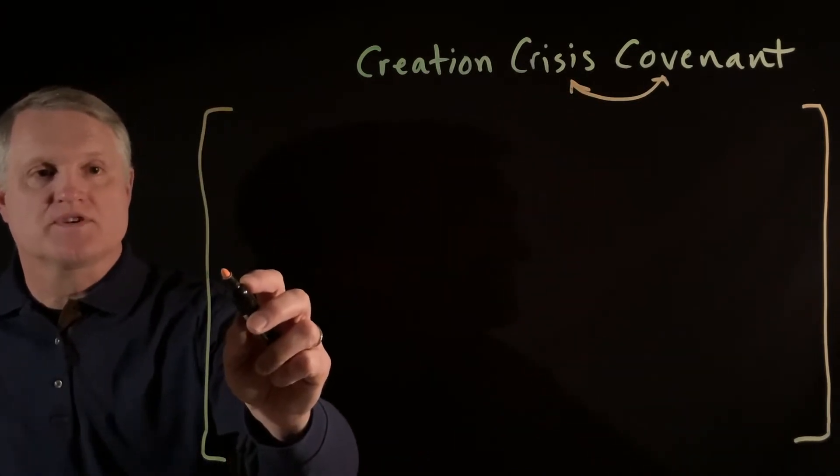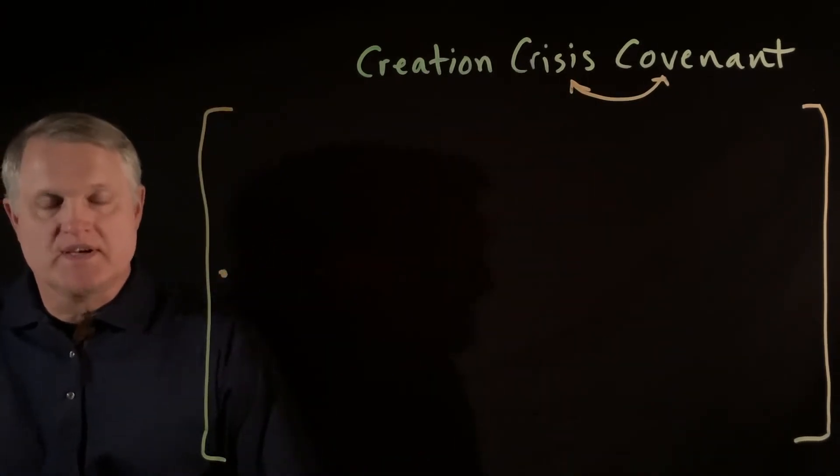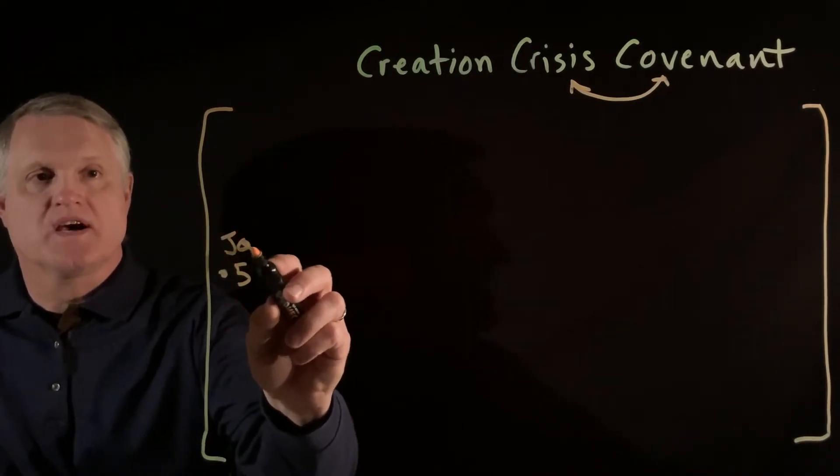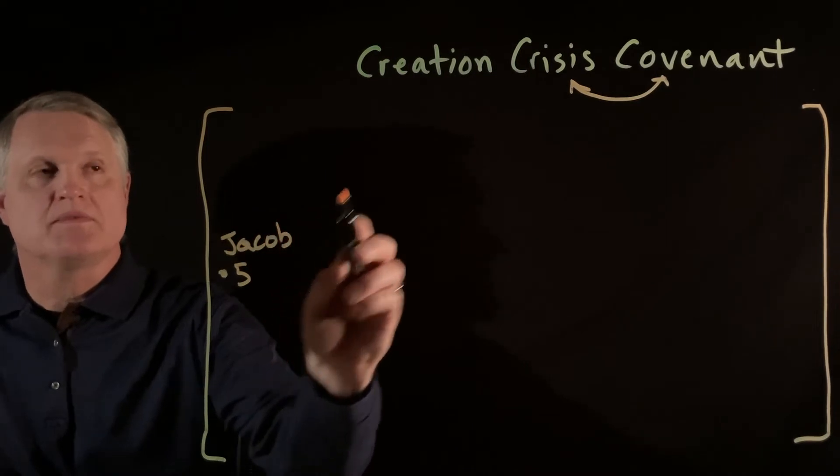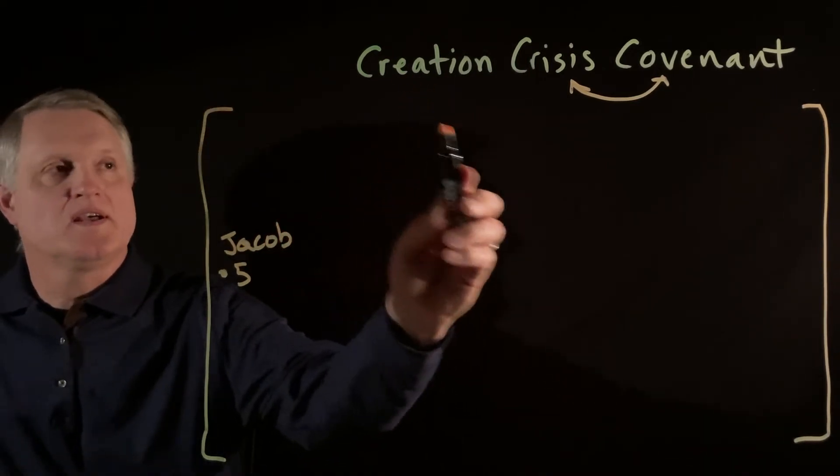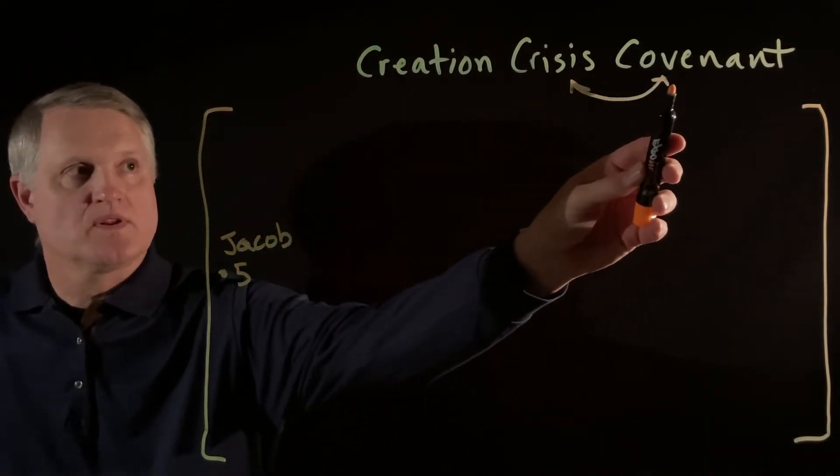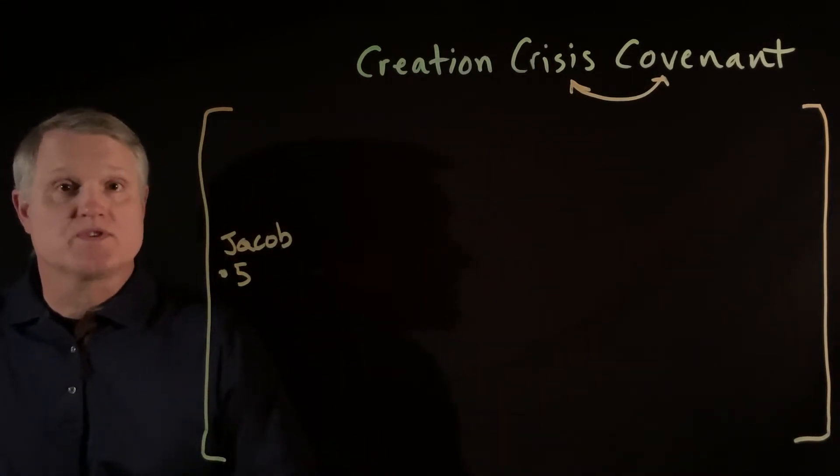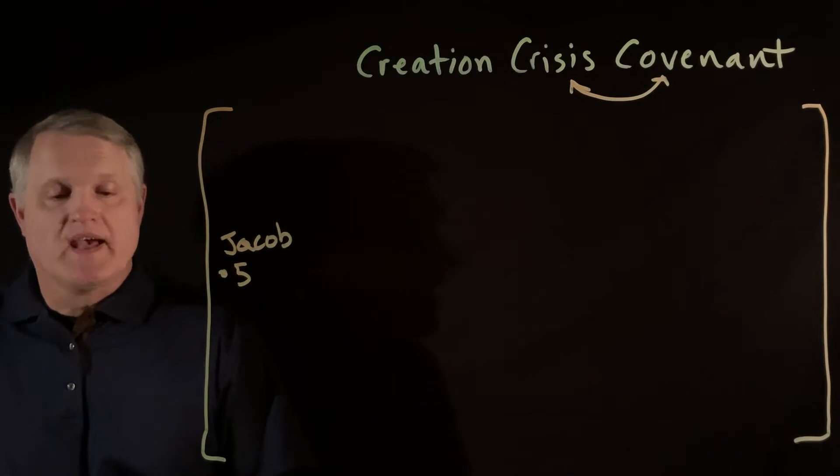It begins in verse 5. This is all in Psalm 78. In verse 5 we have Jacob mentioned, and this is God choosing Jacob, creation's assumed, and the covenant, notice, is really right off the bat. God chose Jacob and he is going to work with Jacob or Israel as a nation.